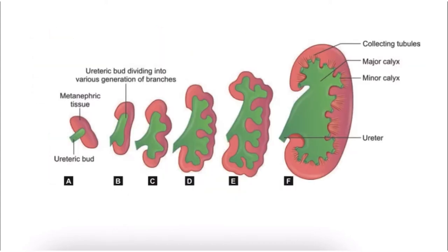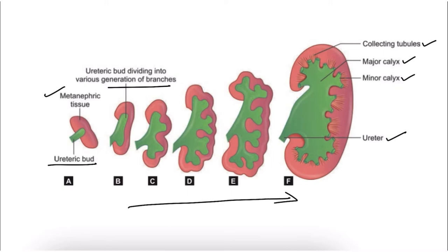As clearly seen in this image, the ureteric bud is connected to the metanephric tissue. The ureteric bud starts to divide into various generations of branches, and this branching leads to the formation of the major calyx, minor calyx, collecting tubules, and ureter. We can see the progression of how these structures are formed by successive generations of branches from the ureteric bud.